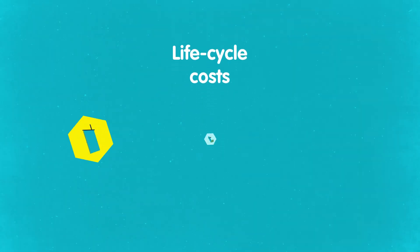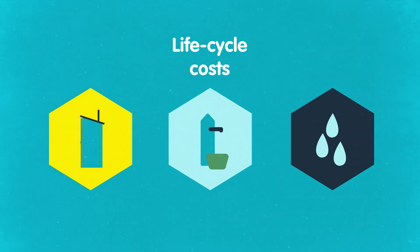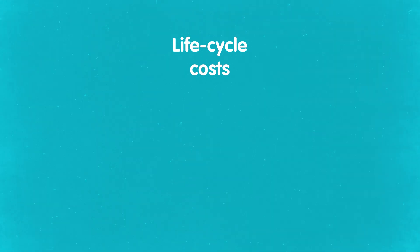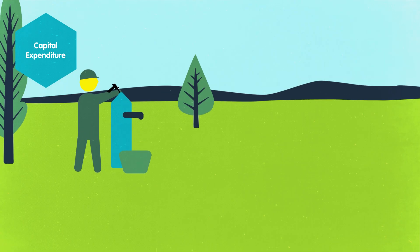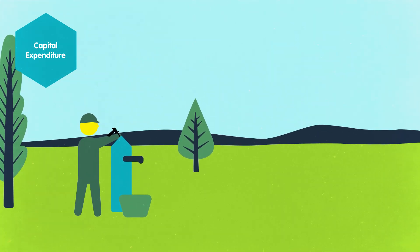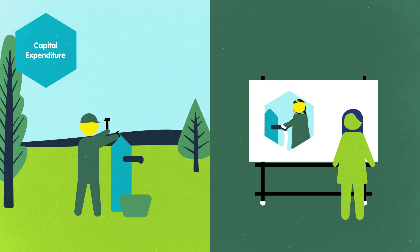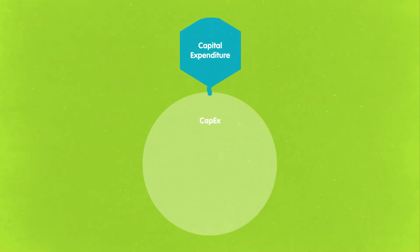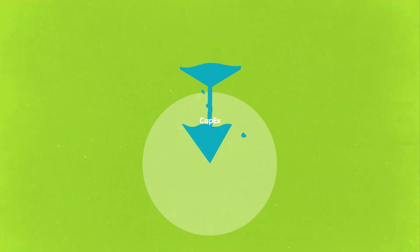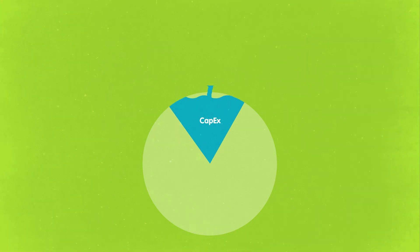For sustainable water, sanitation and hygiene services, capital expenditure, or CAPEX, are the initial investments needed in construction and initial training, like good hygiene behaviours. Expansion costs and upgrades are also included in this category.